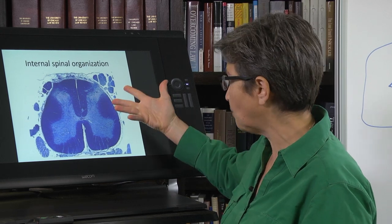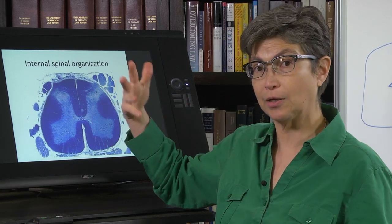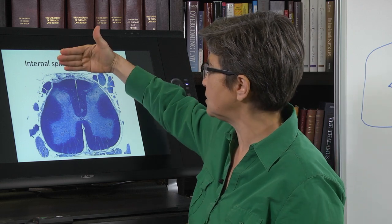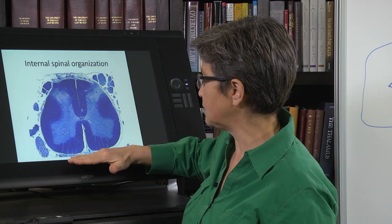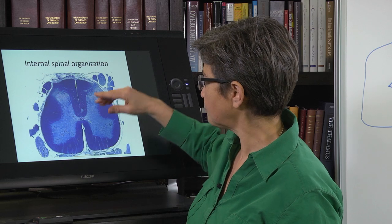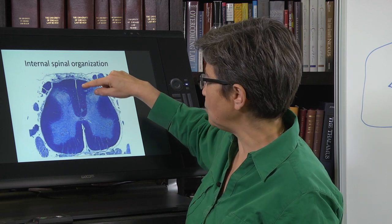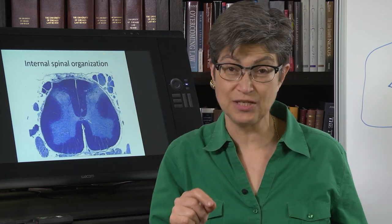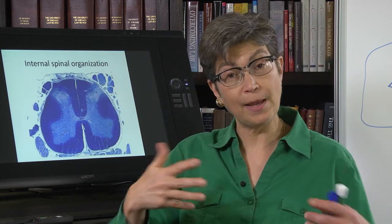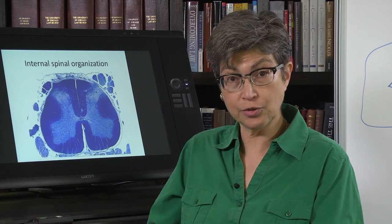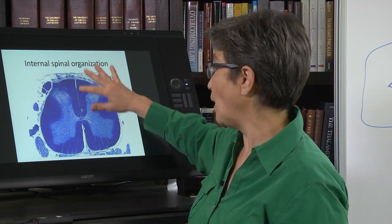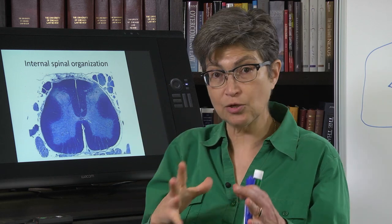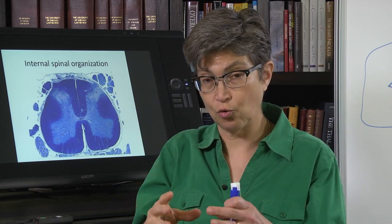This happens to be in the lumbar cord. We'll talk about how I can tell that in a minute. What you see is this is dorsal, this is ventral, and what you see is that there's a butterfly of what in fact is what we would call gray matter. Gray matter is where cells are, neurons are, and then white matter is where axons are. So the basic organization of the spinal cord is a butterfly of gray matter surrounded by white matter.